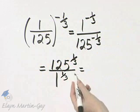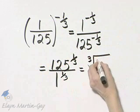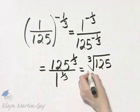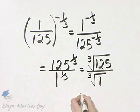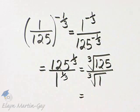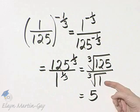And then what does this mean? It means the cube root of 125 over the cube root of 1. The cube root of 125 is 5 because 5 cubed is 125 over the cube root of 1 is 1.